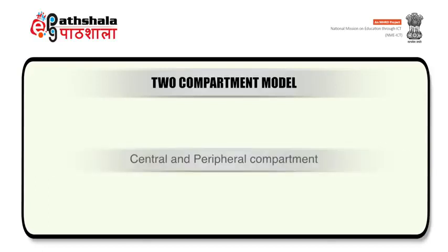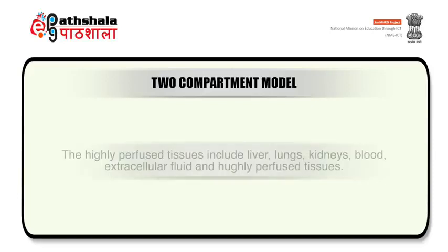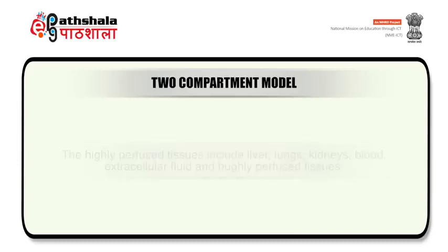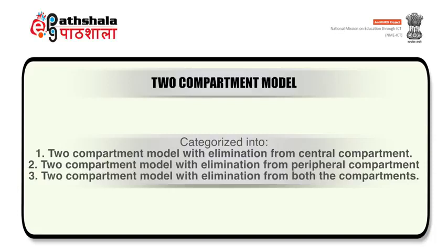In the two compartment open model, two major compartments — central and peripheral — are described. The central compartment equilibrates with the drug instantaneously and includes highly perfused tissues like liver, lungs, kidneys, blood, and extracellular fluid. The peripheral or tissue compartment consists of slowly equilibrating tissues, therefore time is required for equilibration. Two compartment open models are categorized into: elimination from central compartment, elimination from peripheral compartment, or elimination from both compartments.